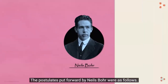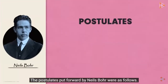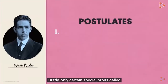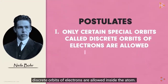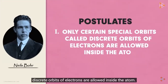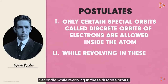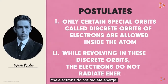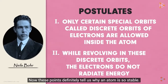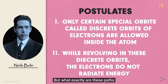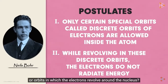The postulates put forward by Niels Bohr were as follows. Firstly, only certain special orbits called discrete orbits of electrons are allowed inside the atom. Secondly, while revolving in these discrete orbits, the electrons do not radiate energy. These points definitely tell us why an atom is so stable. But what exactly are these orbits in which the electrons revolve around the nucleus?